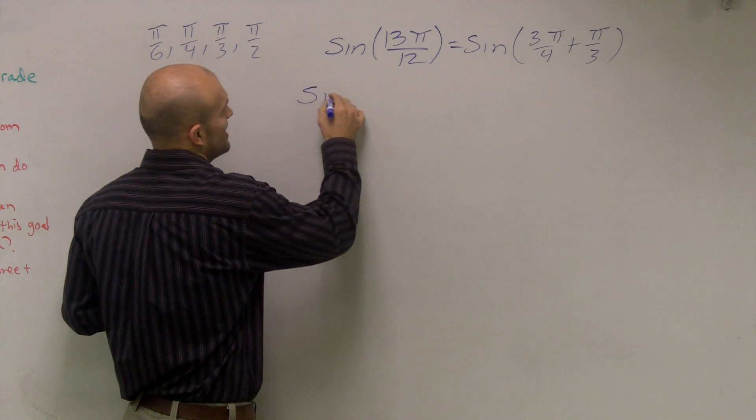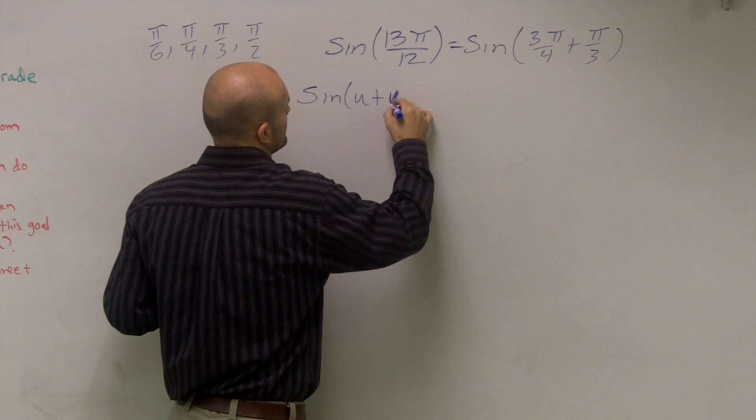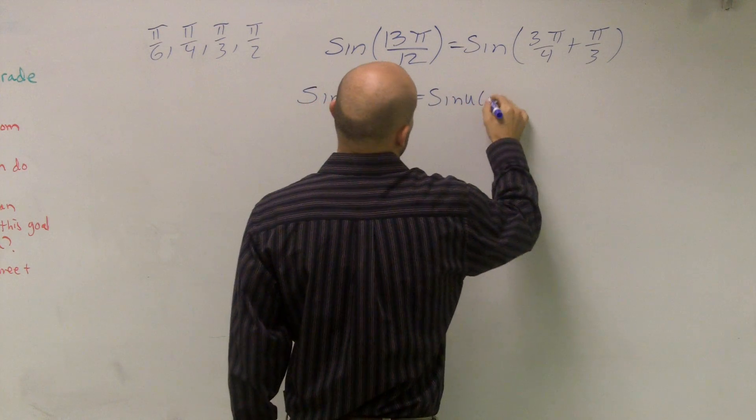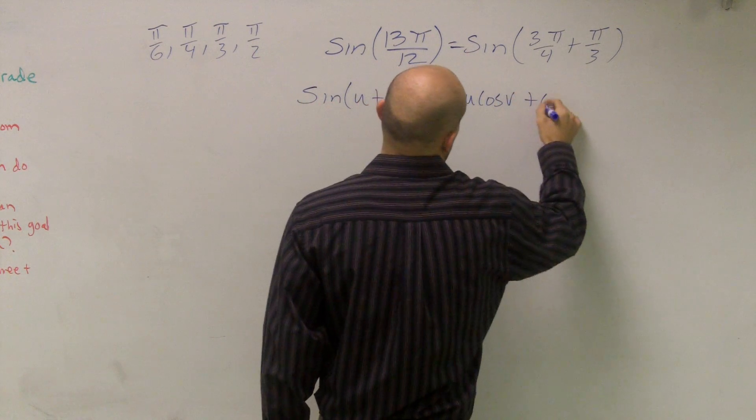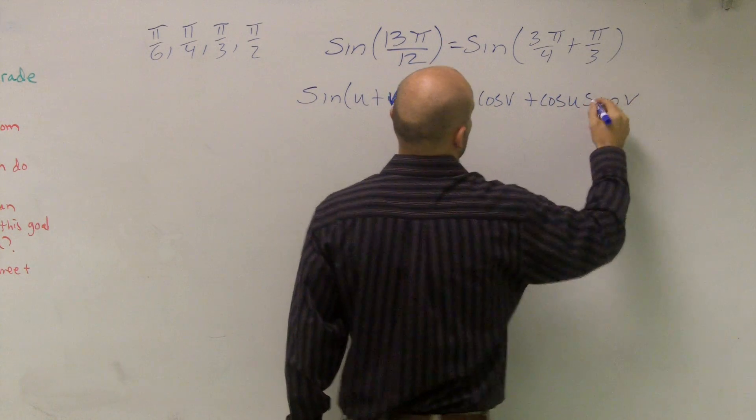And what that's going to look like is if I have two angles that I'm adding sine of u plus sine of v, what that equals is the sine of u times the cosine of v plus the cosine of u times the sine of v.